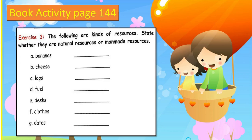And letter D, fuel? Natural resources. Letter E, desk? It's man-made resources. How about clothes? It's man-made resources. And letter G, dates? It's natural resources.